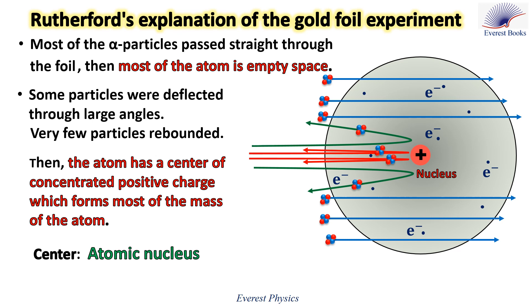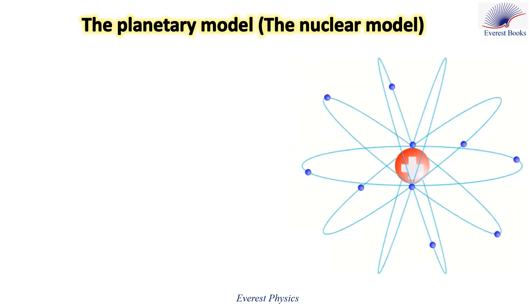Rutherford suggested that the alpha particles which hit the nucleus directly rebounded, and those that passed very close to the nucleus were deflected through large angles. Based on the results of the gold foil experiment, Rutherford put his model of the atom as the planetary model.